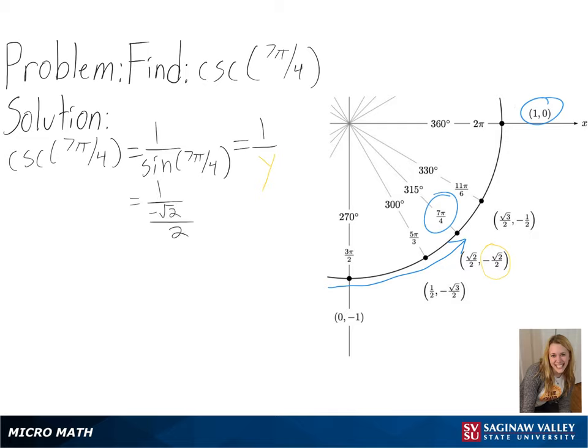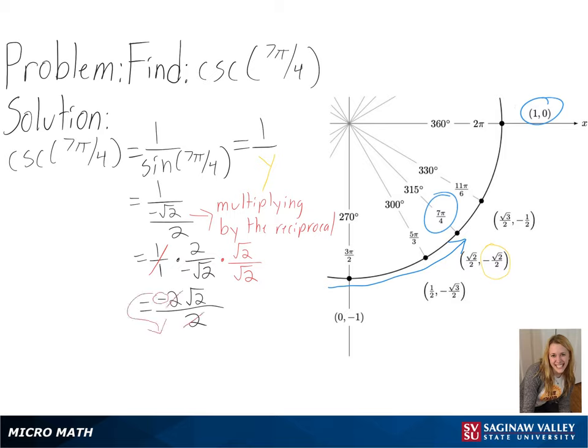So we get 1 over negative square root of 2 over 2, and then multiplying by the reciprocal and simplifying, we get negative square root of 2 as our final answer.